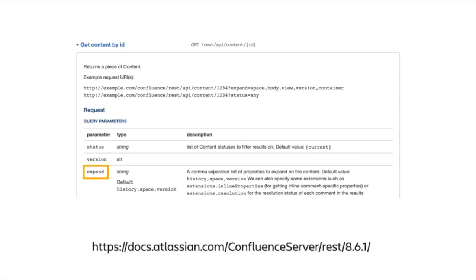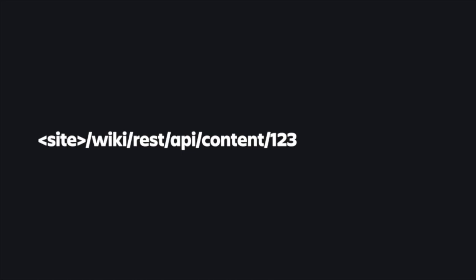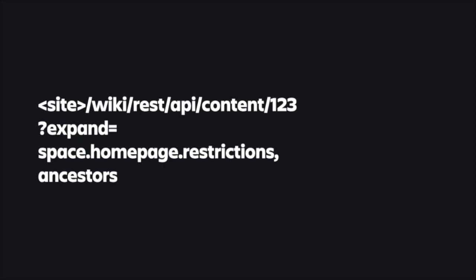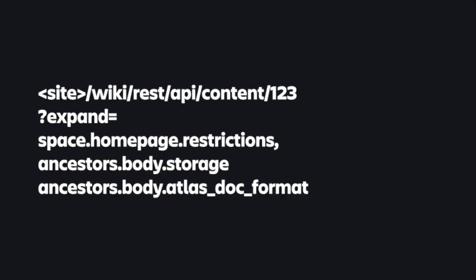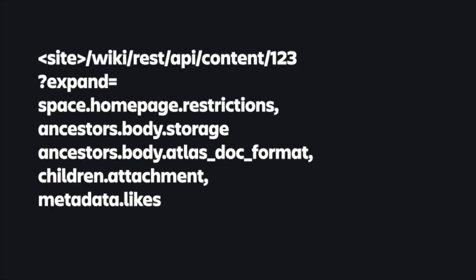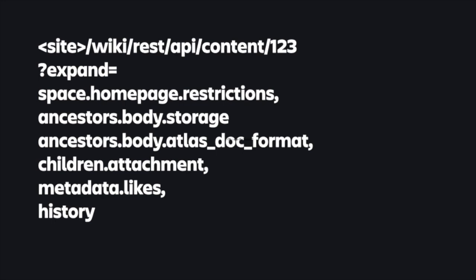For the uninitiated, let me give an example. You could say to some tenant: regardless of the type, can you fetch me this content? I'm pretty sure it's a page, but you can confirm that. Also, can you fetch me the page's space? And while you're at it, can you fetch me the home page of that space? And maybe the restrictions of the space's home page, and possibly the ancestors of the page as well. And let's go and grab the bodies of these ancestors, and maybe the attachments and the likes and the history and so on and so forth. It was basically GraphQL before GraphQL.